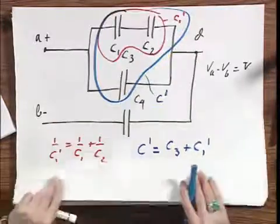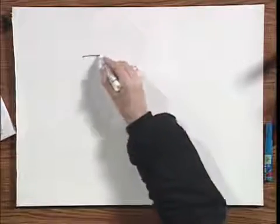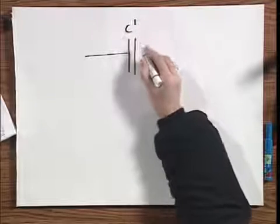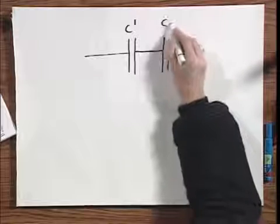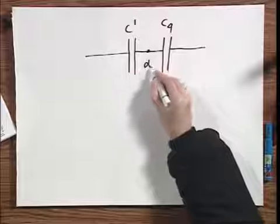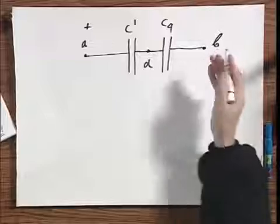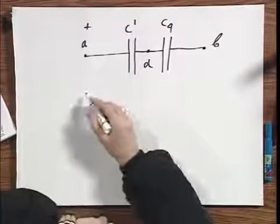And so I have now reduced this circuit to an entirely different circuit. I have now here C prime, and I know how large C prime is. Then I have C4, this point is D, this is A, and this is B. Check for yourself, this is exactly what the circuit is now.